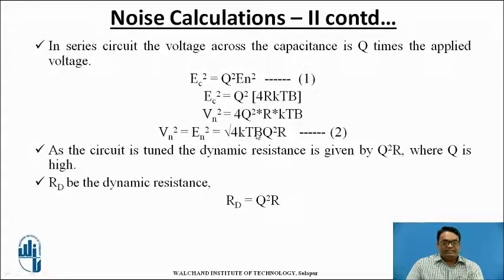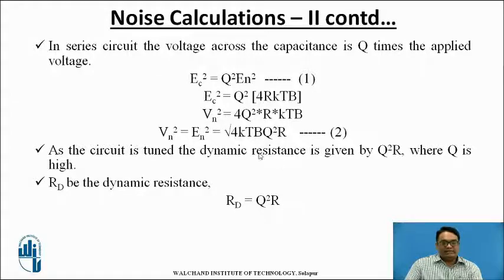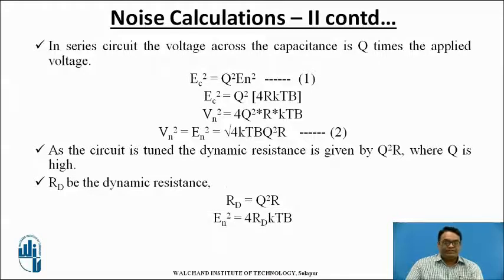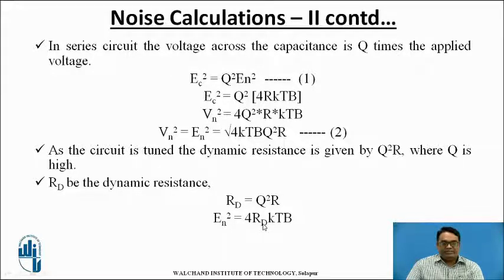By further simplifying and taking the square root, all terms come under the square root. As the circuit is tuned, the dynamic resistance is given by Rd = Q²R, where Q is very much higher. By replacing the total resistance with the dynamic resistance, the equation becomes EN² = Rd × KTB.